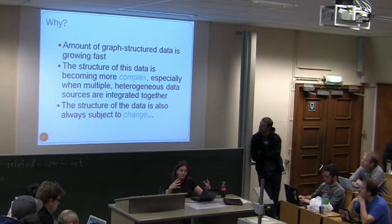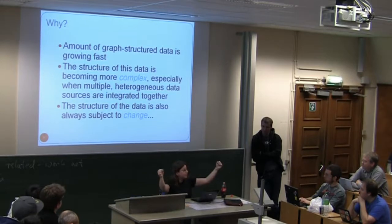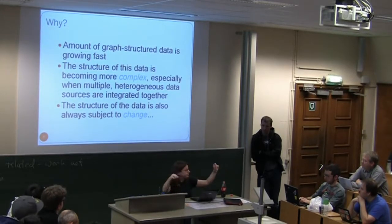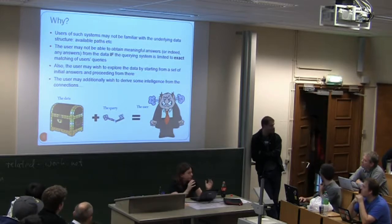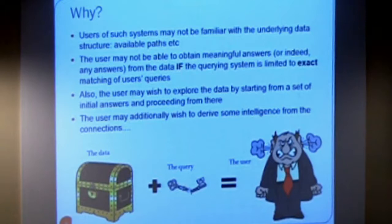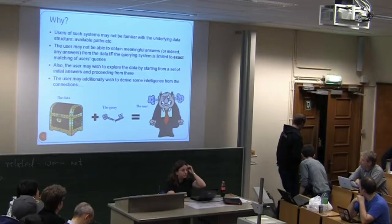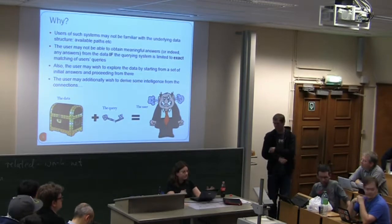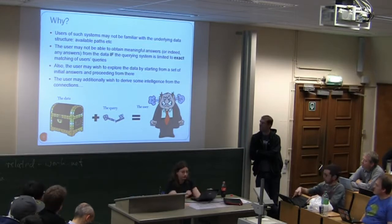The problem is that graph data is becoming more and more complex, especially with respect to the paths. Paths can change all the time - one day you might have two things joined by three paths XYZ, the next by XYZA. The goal is to avoid data being useless because the query language can't extract interesting information, and to allow users to explore data and derive intelligence from it.